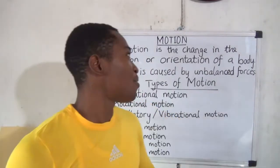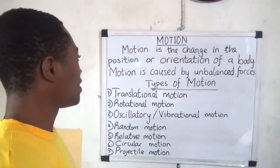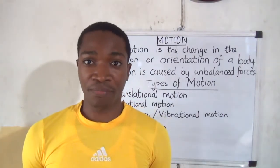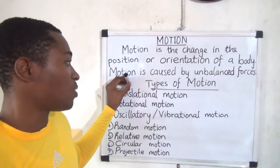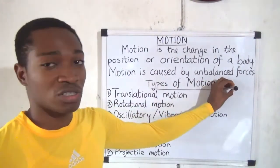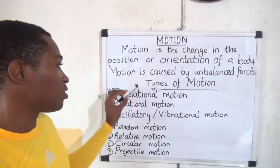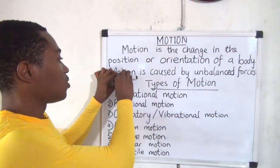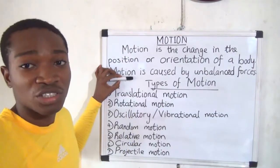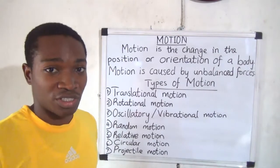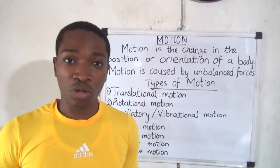Hello, our topic today is motion. What is motion? Motion is defined as the change in position or orientation of a body. When a body located at one point changes position, then it has moved. Or if an object rotates, its orientation has changed. So if it is position or orientation that changes, that is motion.